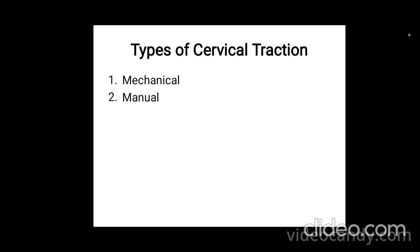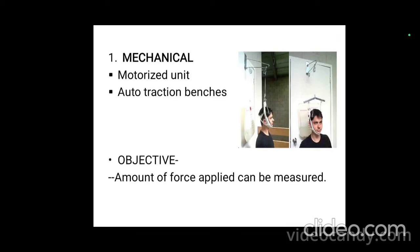There are basically two types of cervical traction: mechanical and manual. In this video we will cover the mechanical aspect. Mechanical means the traction is applied with a machine — a motorized unit used with auto traction benches. The objective of mechanical cervical traction is that the amount of force applied can be measured. This is the traction table used in mechanical cervical traction.